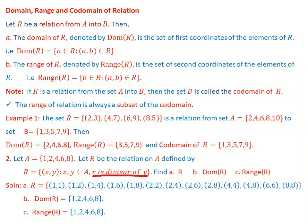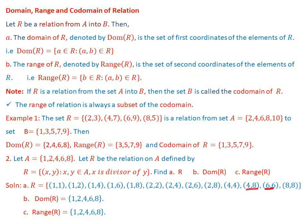Since x is a divisor of y for all x and y in set A, the relation R is: {(1,1), (1,2), (1,4), (1,6), (1,8), (2,2), (2,4), (2,6), (2,8), (4,4), (4,8), (6,6), (8,8)}. This is because 1 divides every element, 2 divides 2, 4, 6, and 8; 4 divides 4 and 8; 6 divides 6; and 8 divides 8.